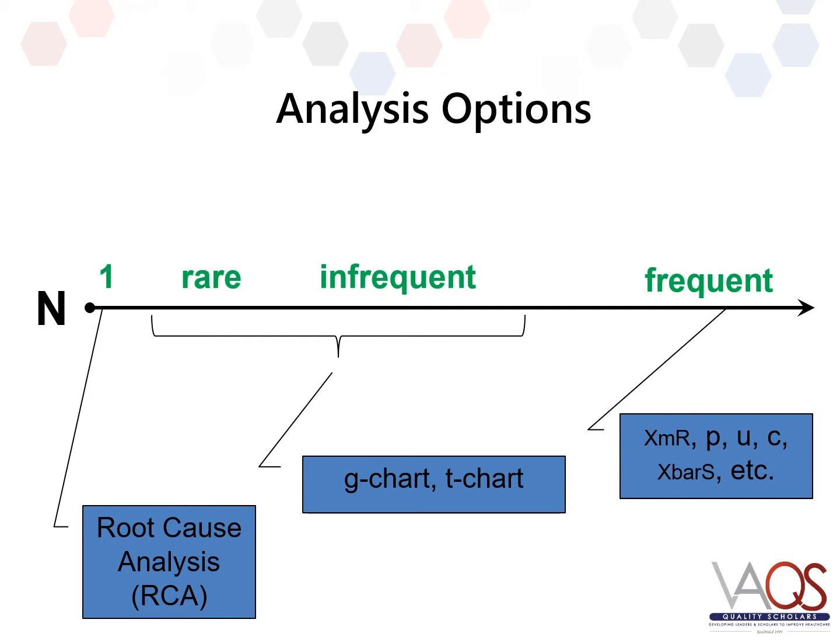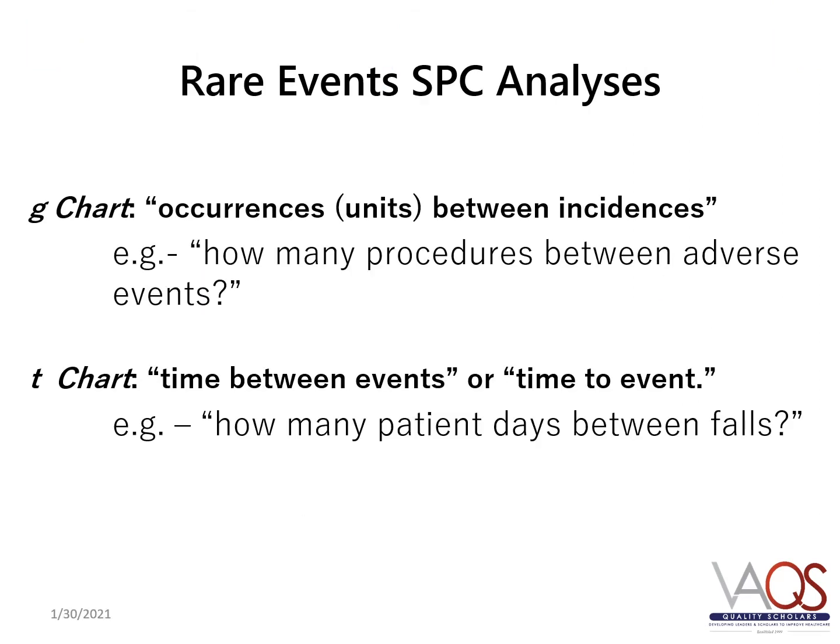Rare events SPC analyses are indicated in situations where the number of observations is greater than one and the event rate is low or infrequent. Standard SPC analyses, such as the XMR and P-Chart, require frequent observations. Two commonly used SPC approaches for rare events analyses include the G-Chart and the T-Chart. The G-Chart measures counts of occurrences between incidences, while the T-Chart measures time between events. An example appropriate for a G-Chart is how many procedures are there between adverse events; a T-Chart example is how many patient days between patient falls.